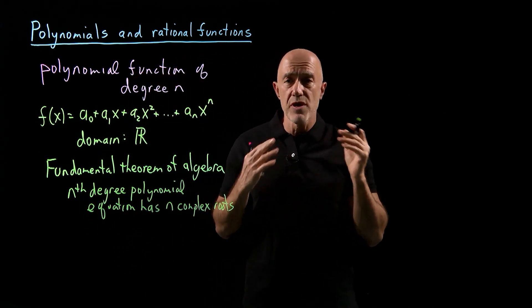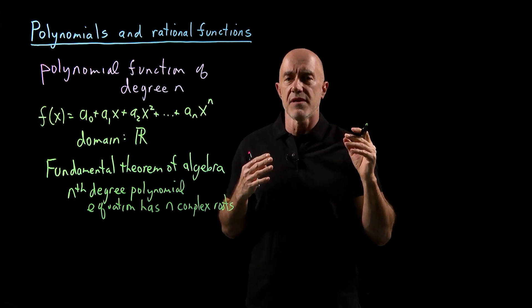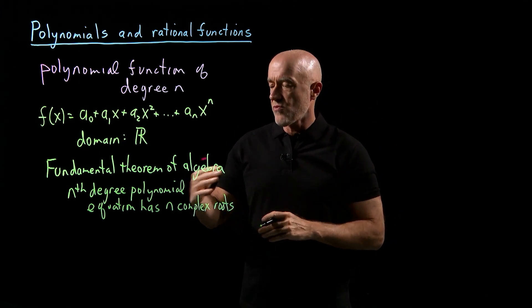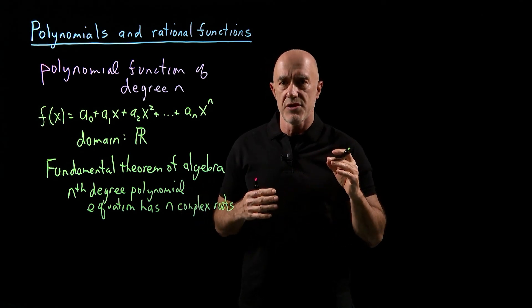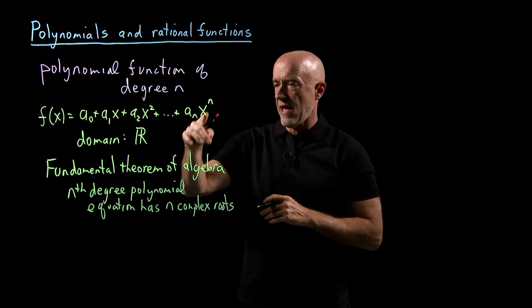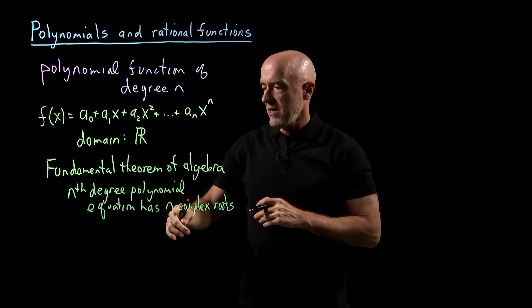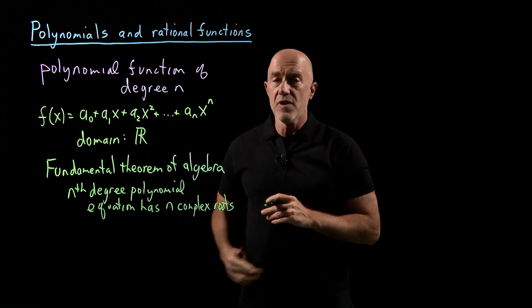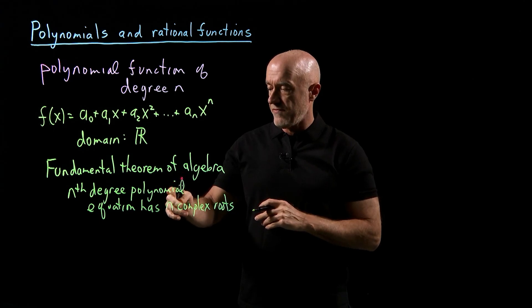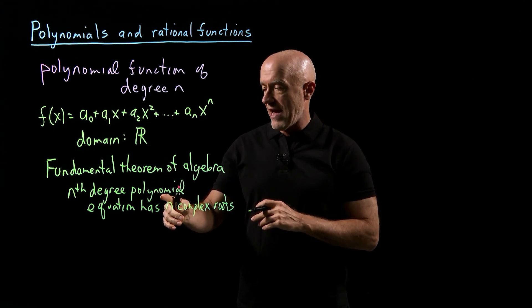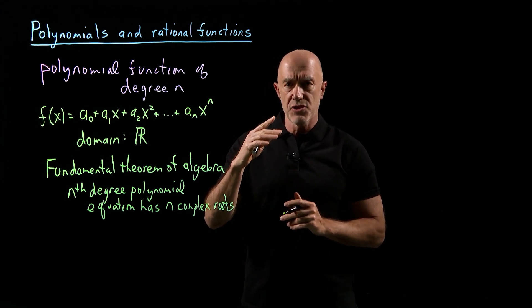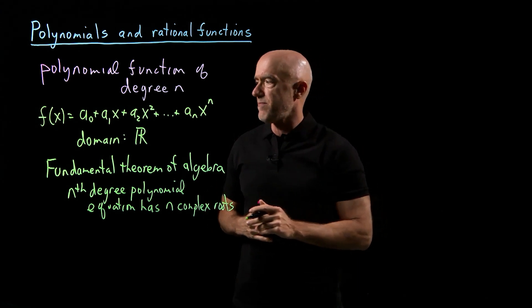Remember that the real numbers are a subset of the complex numbers, so a real root is also considered a complex root. So if it has an xⁿ term here, it should have n complex roots. There's a provision to this in that we have to count the multiplicity of each root, but I'll show you what that means through an example.